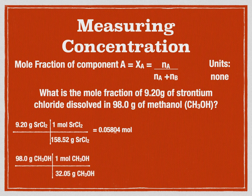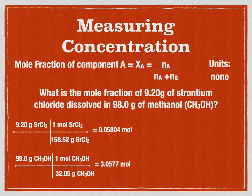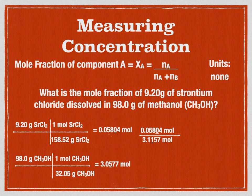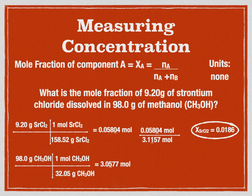Converting methanol to moles: mass divided by molar mass gives 3.0577 moles of methanol. Mole fractions are part over the whole, so the total moles is those two combined. The mole fraction of strontium chloride is the moles of strontium chloride divided by the total moles in the mixture. You should get 0.0186, rounded to 3 significant digits.